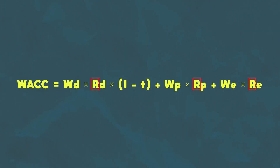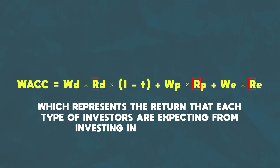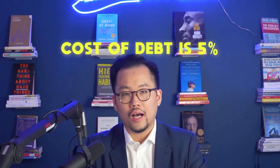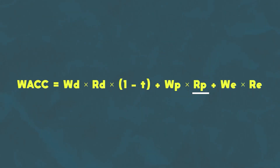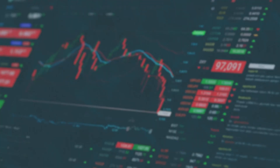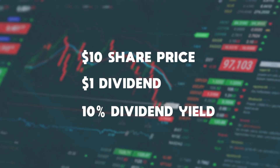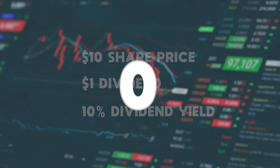The R in the formula represents the return each type of investor expects. Starting with the cost of debt, let's say the debt holders are loaning the company money at a 5% interest rate — so the cost of debt is 5%. For the cost of preferred, that's irrelevant in our example since the company has no preferred shares, but if it did, the cost of preferred would be the dividend yield. For example, if each preferred share costs $10 and the dividend is $1, the dividend yield — and cost of preferred — would be 10%. For our example, we'll assume it's zero.